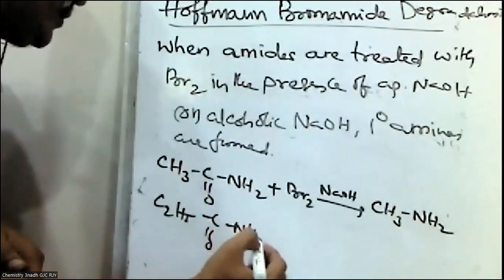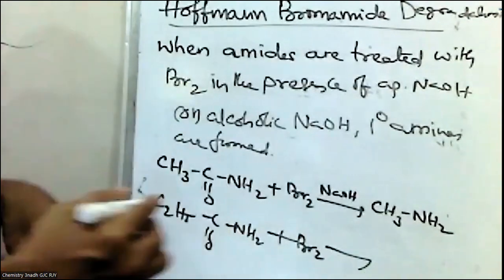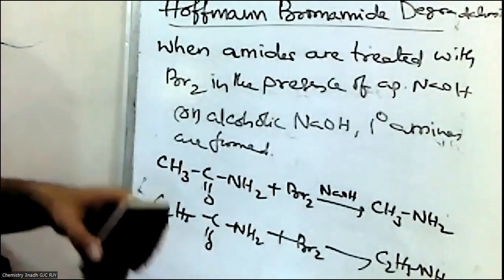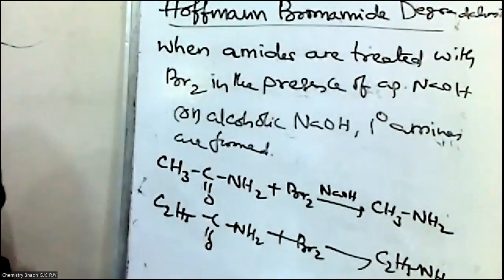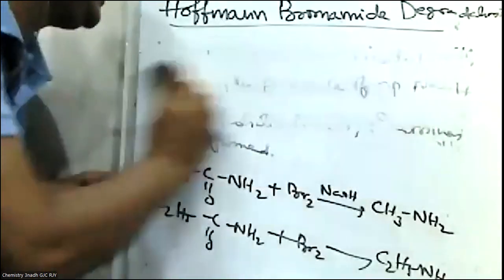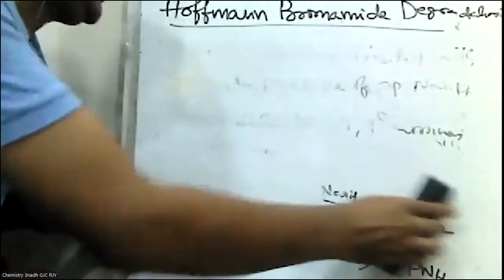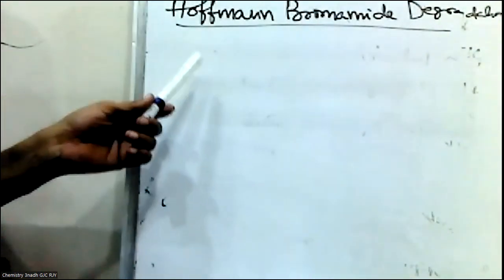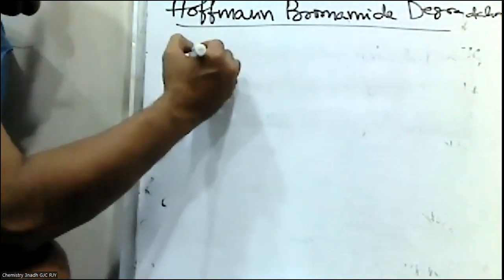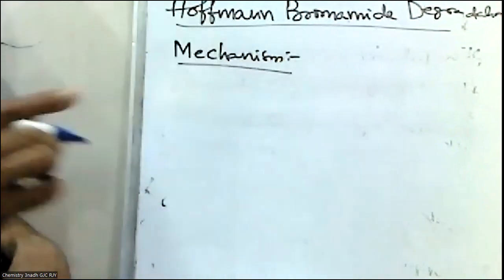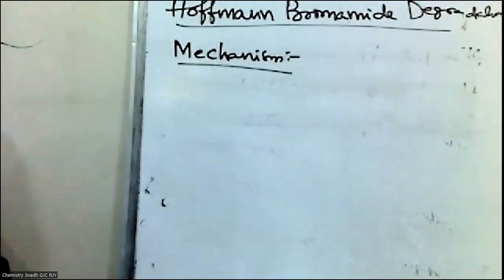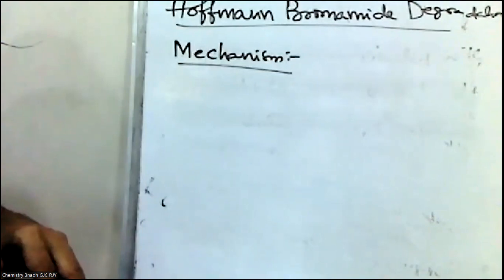Similarly, if you take C2H5CONH2 and treat it with bromine in the presence of NaOH, C2H5NH2 is formed. This reaction, Hofmann Bromamide degradation, is suitable for the preparation of both aromatic and aliphatic primary amines. It is suitable only for primary amides, and it involves the migration of an alkyl or aryl group from the carbonyl carbon of the amide to the nitrogen atom.